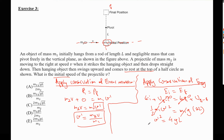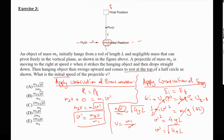We need the initial speed V of the projectile, not V′. Replacing V′ with M2·V / M1, we get M2·V / M1 = √(4gL). Solving for V: V = (M1/M2)·√(4gL) = (M1/M2)·2√(gL). The correct answer is C.